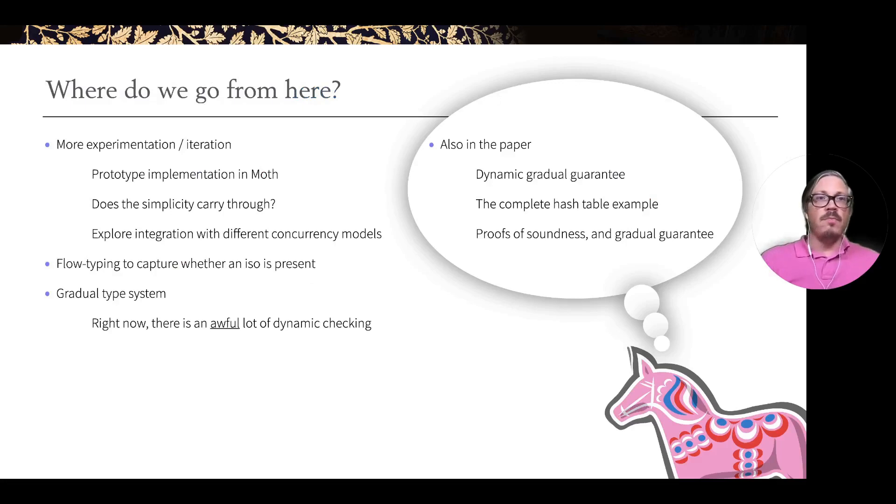Where do we go from here? We want to do more experimentation and more iteration to program in this system and to understand where it falls over and where the limitations are. We have a prototype implementation in Moth. We would like to keep developing that and experimenting and writing more code. Where does the simplicity carry through? Where does it fall over?